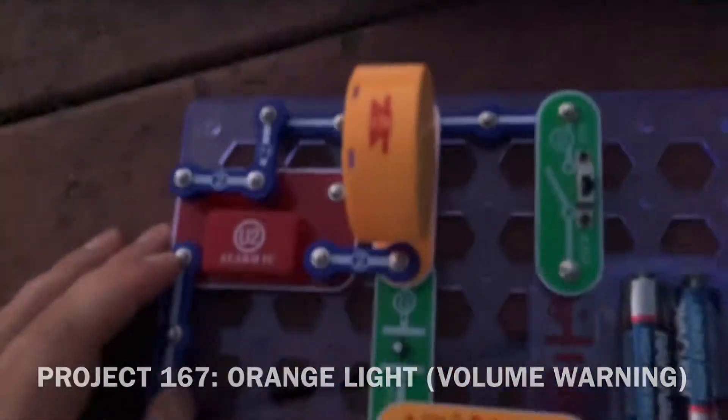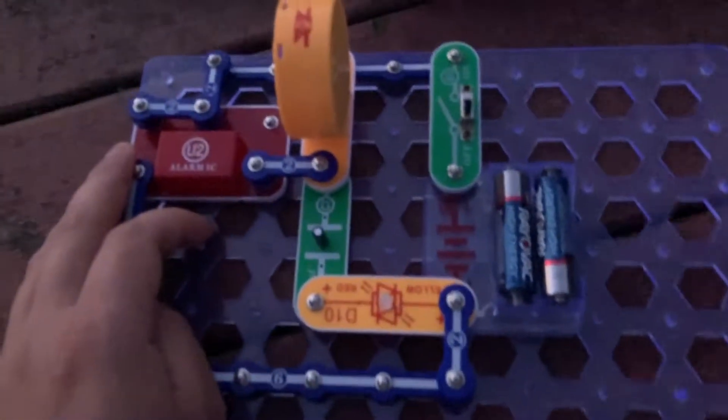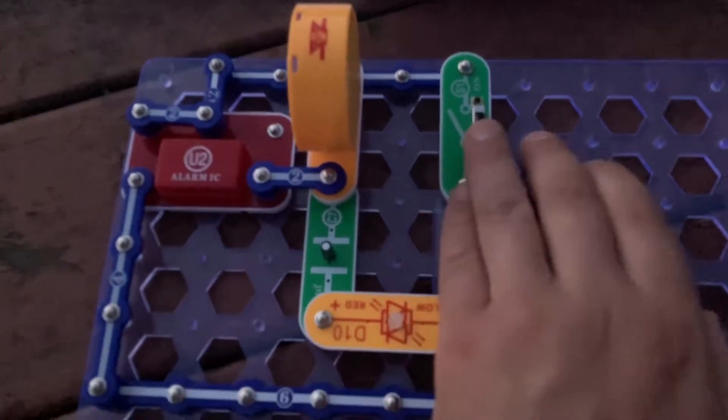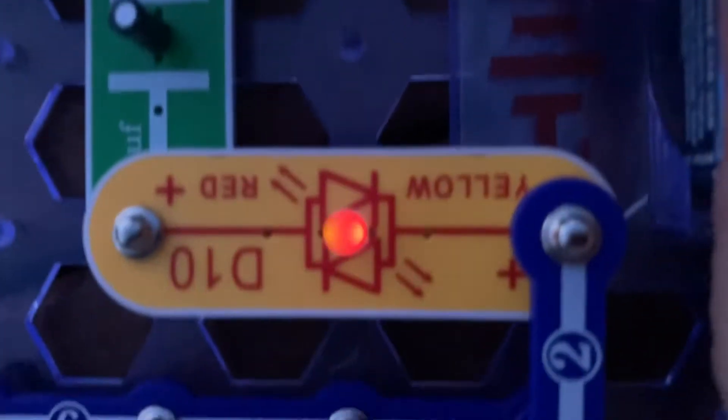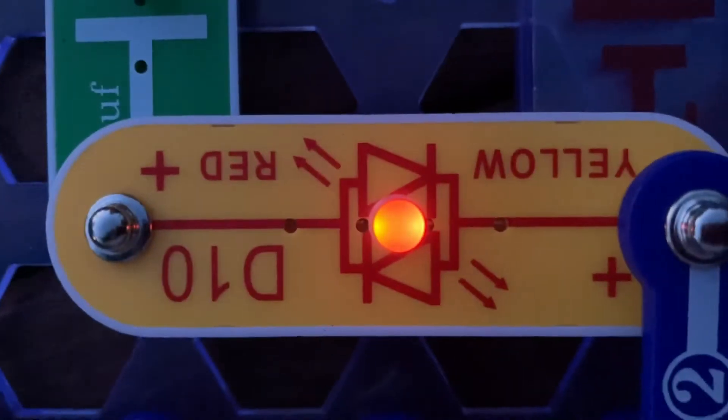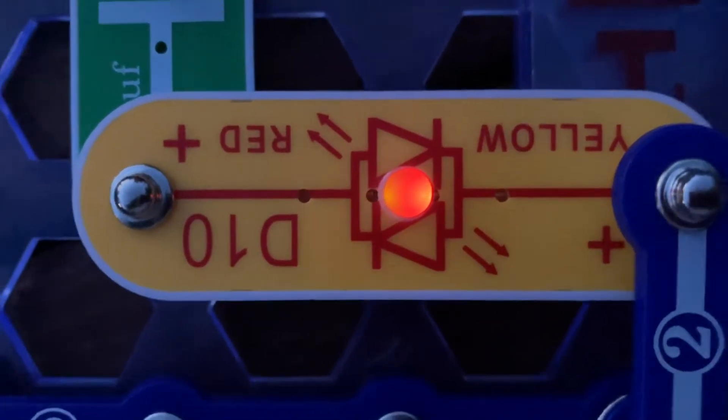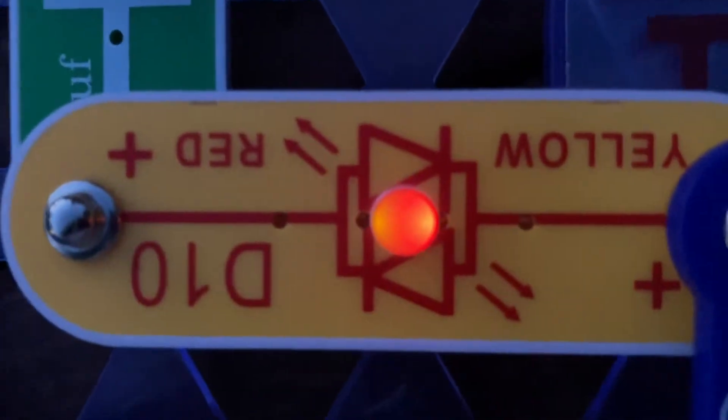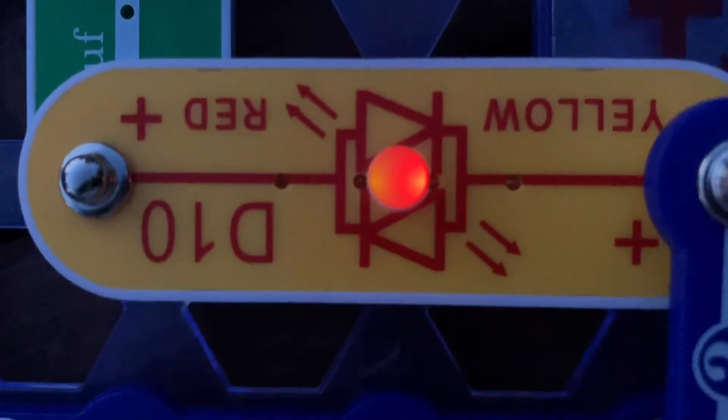Project 167 is orange light. Please turn down your volume because there's going to be a loud alarm here, but watch the bicolor LED. As the alarm sounds, the bicolor LED glows, but it may look orange instead of either yellow or red.